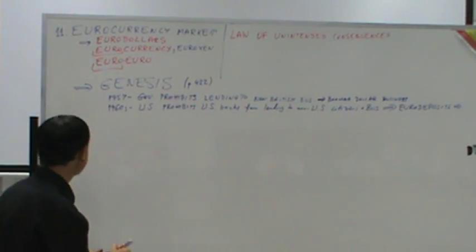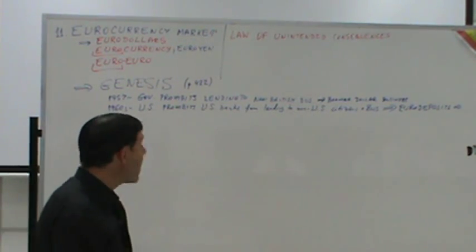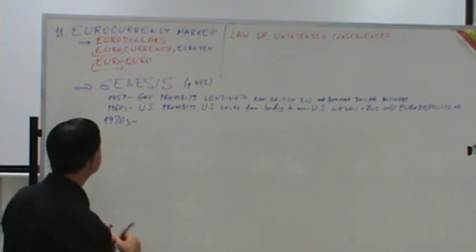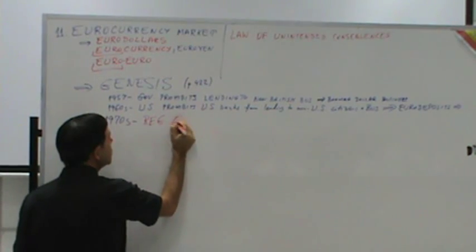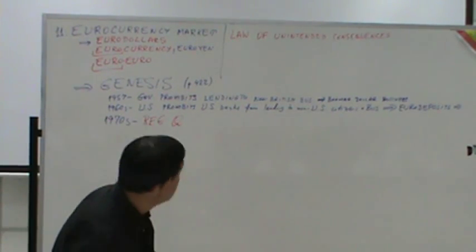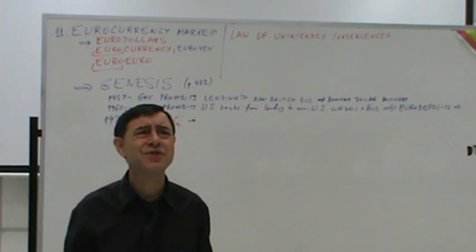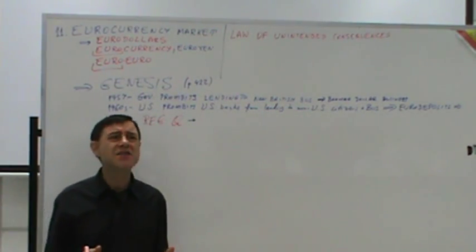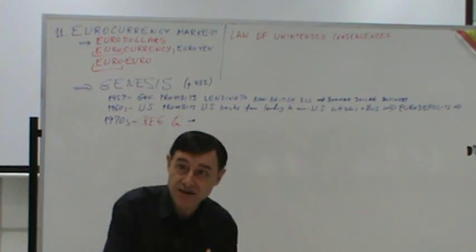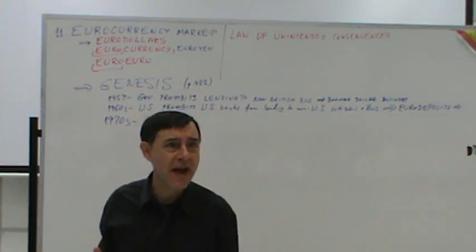Step three: the 1970s — Regulation Q. Regulation Q is simple: the US government says interest rates on deposits are rising to 7%, 8%, 10%, 12% — killing American banks because they must pay high rates to keep deposits.